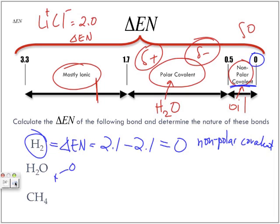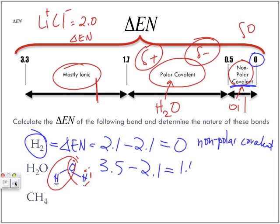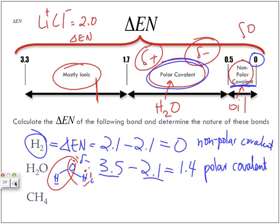For water, H₂O, because we have more than one hydrogen, we look at the bond between oxygen and one hydrogen. We look up oxygen, which has an electronegativity of 3.5, and subtract it by hydrogen's electronegativity of 2.1, giving us a value of 1.4. Since 1.4 falls within the polar covalent range, the higher electronegativity value means oxygen is slightly negative, while hydrogen — the lower value — is slightly positive.